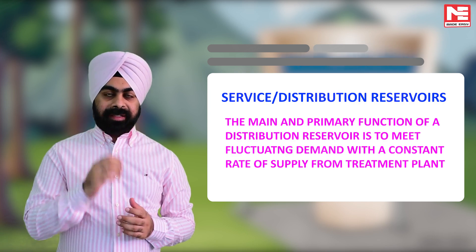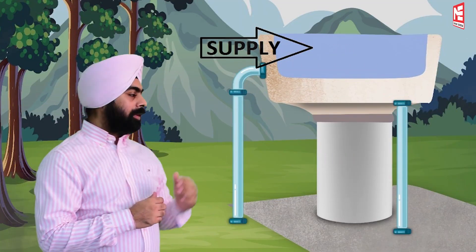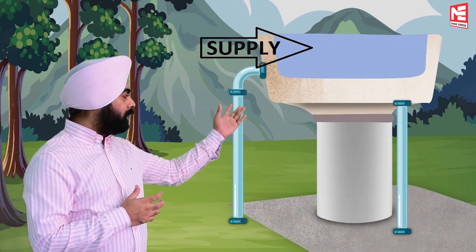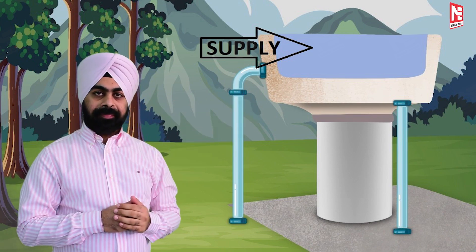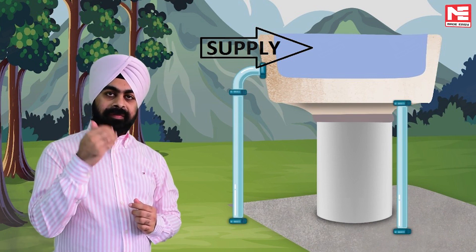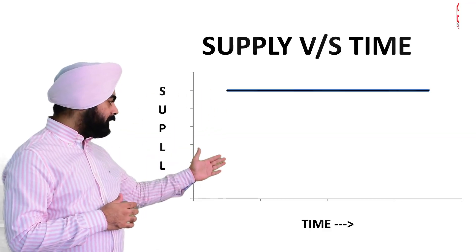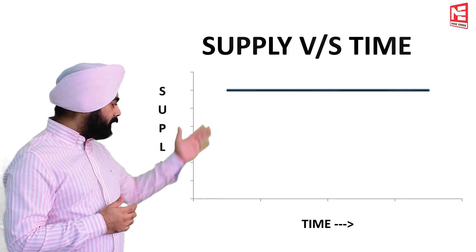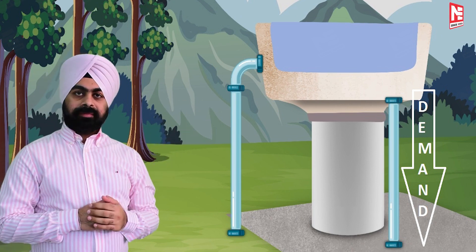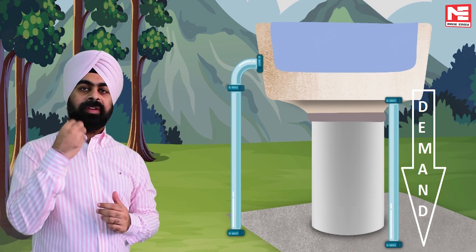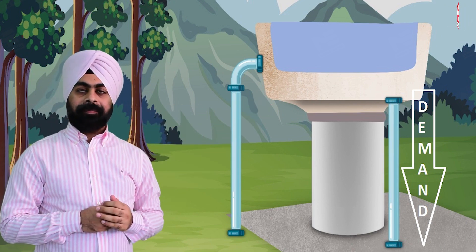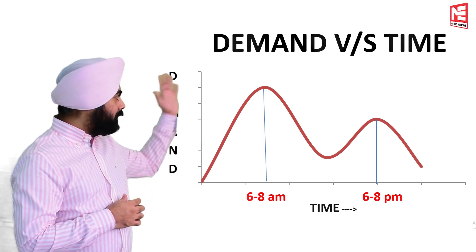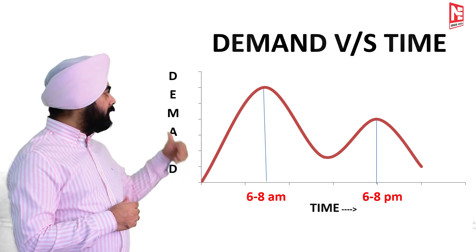To understand this point, let us suppose this is our reservoir. In this reservoir, water is supplied from the treatment plant at a constant rate. If we see this graphically, we will observe a straight line parallel to the x-axis. Now from the same reservoir, water is sent into the community to meet our demand, which is variable. This variation in demand is maximum in the morning, it falls in the afternoon, and it again increases in the evening.